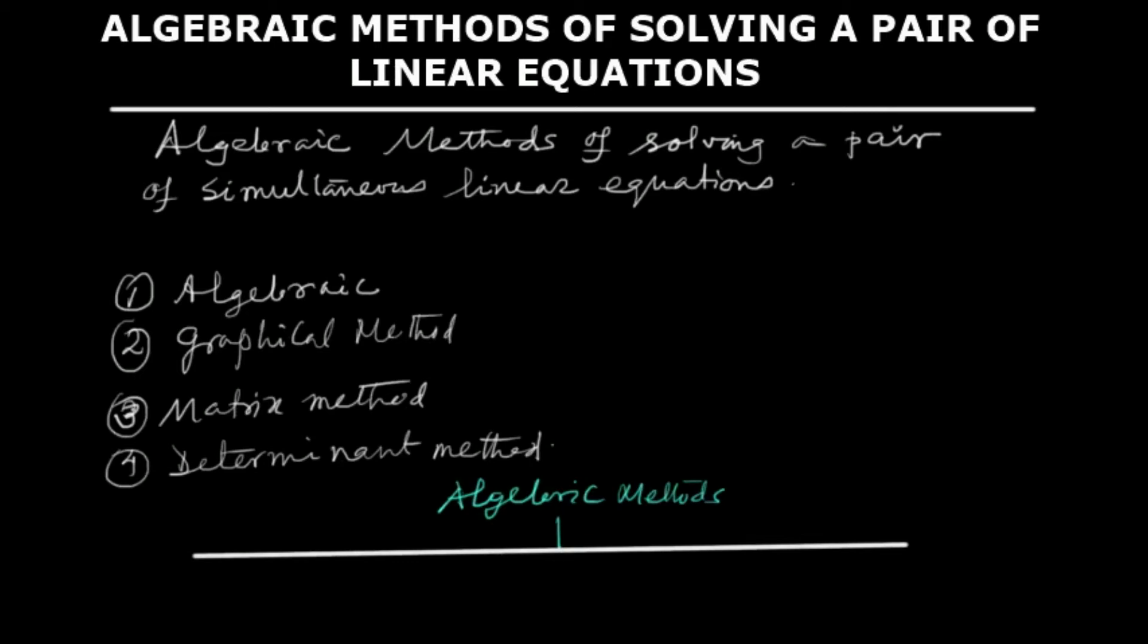Hello viewers, in linear equations when it is simultaneous, we have discussed the system of consistency and inconsistency. Graphically, the pair of lines if they are non-parallel will intersect. If they are parallel they will not intersect, and in that case we will not get a solution. Now we will discuss the algebraic methods of solving a pair of simultaneous linear equations.